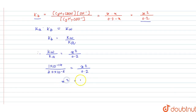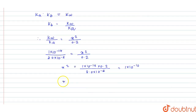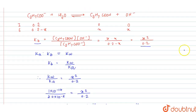Solving for x: x² = (1 × 10⁻¹⁴ × 0.2) / (2.0 × 10⁻⁵) = 1 × 10⁻¹⁰. Therefore x = 1 × 10⁻⁵. Since x represents the concentration of OH⁻, the concentration of OH⁻ = 1 × 10⁻⁵.